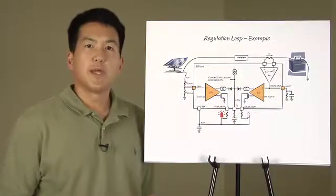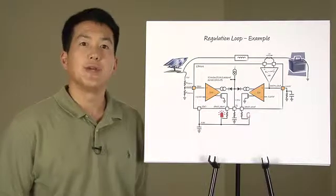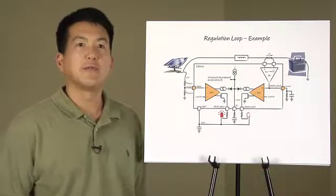If the input regulation loop did not exist in this circuit, the panel would collapse to a very low voltage and very little power would be left to charge the battery.